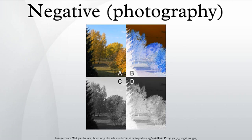In photography, a negative is an image, usually on a strip or sheet of transparent plastic film, in which the lightest areas of the photographed subject appear darkest and the darkest areas appear lightest. This reversed order occurs because of the extremely light-sensitive chemicals a camera film must use to capture an image quickly enough for ordinary picture-taking, which are darkened, rather than bleached, by exposure to light and subsequent photographic processing. In the case of color negatives, the colors are also reversed into their respective complementary colors.